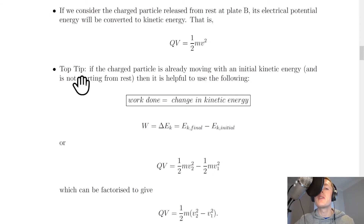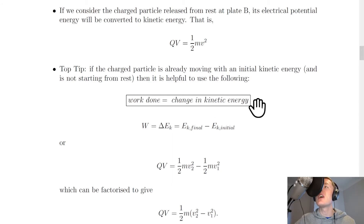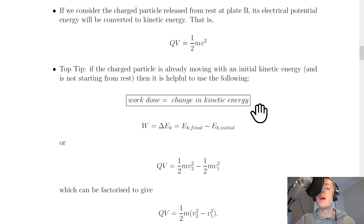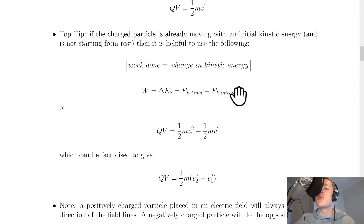A top tip: if the charged particle is already moving with an initial kinetic energy and is not starting from rest, then it is helpful to use the relationship that work done equals the change in kinetic energy — this is a very useful rule to remember. In symbol form, work done equals delta EK, which equals EK final minus EK initial, the final kinetic energy minus the initial kinetic energy.